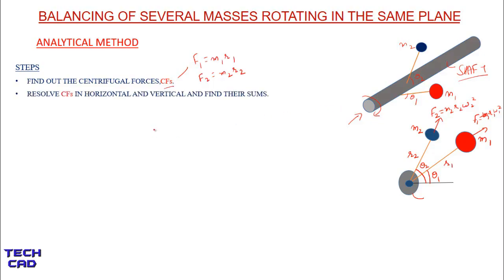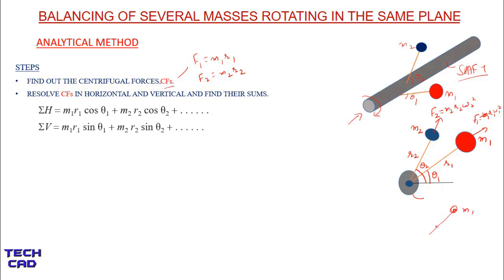Step 2: resolve centrifugal forces into horizontal and vertical components and find their sums. For mass M1 with radius R1 at angle theta 1, the horizontal component is F1 cos theta 1, which equals M1 R1 cos theta 1, and the vertical component is F1 sin theta 1, which equals M1 R1 sin theta 1. So the horizontal sum is M1 R1 cos theta 1 + M2 R2 cos theta 2, and the vertical sum is M1 R1 sin theta 1 + M2 R2 sin theta 2, and so on for more masses.